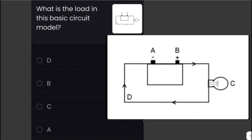What is the load in this basic circuit model? In a basic circuit model there is a voltage source shown as a battery at points A and B, a load, and conductors drawn using lines and arrows. The load in this model is the light bulb, pictured at point C. Examples of loads are light bulbs, resistors, and motors.